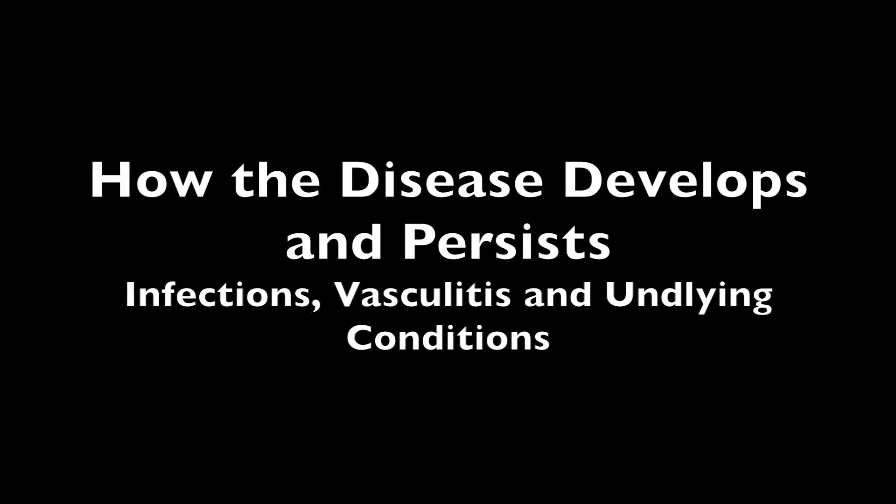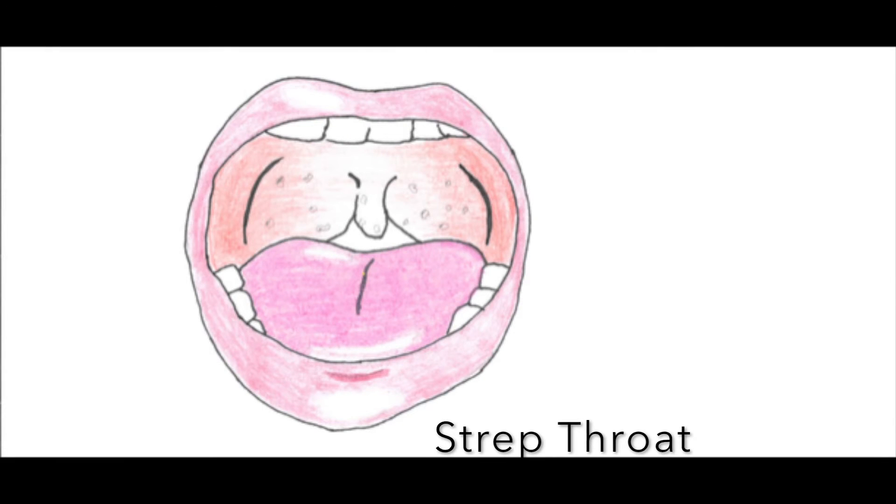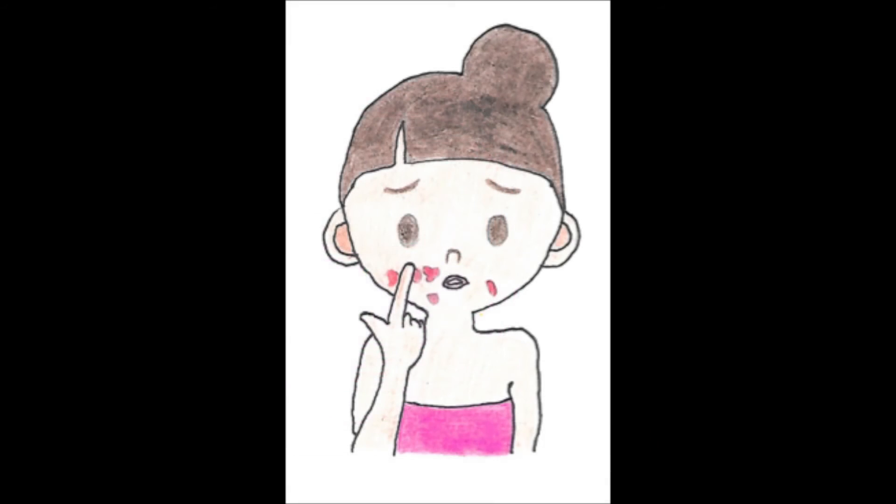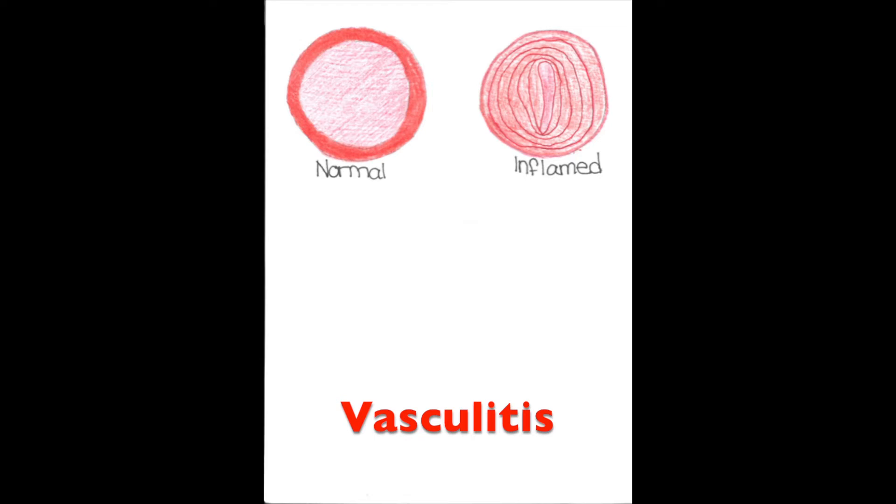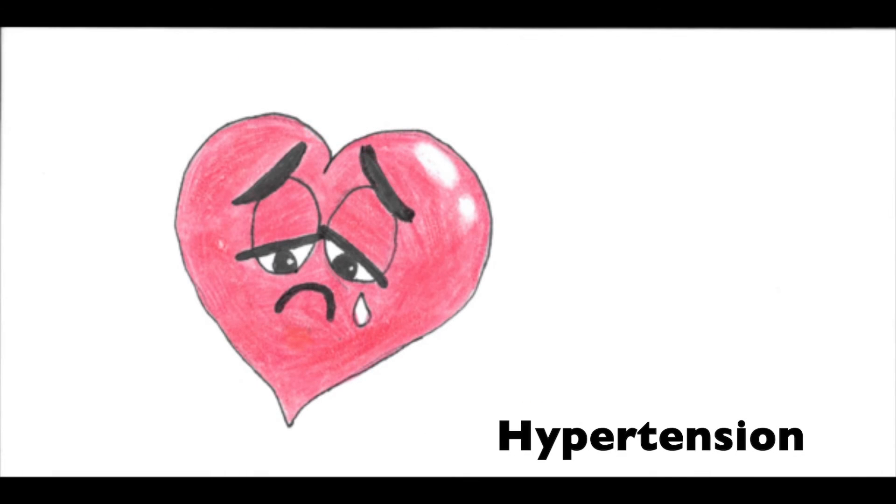There are a few ways how the disease develops and persists. A few weeks after an infection occurs, excess antibodies used to fight the infection may cause inflammation in the glomerulus. Vasculitis, which is the inflammation of the blood vessels, may cause glomerulonephritis if the inflammation occurs in the kidneys. Underlying conditions such as hypertension may cause malfunction in the kidneys, resulting in glomerulonephritis. It can also be noted that glomerulonephritis can cause high blood pressure.